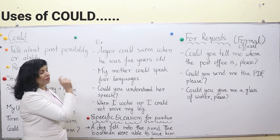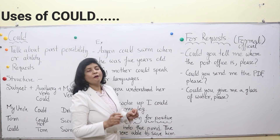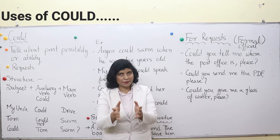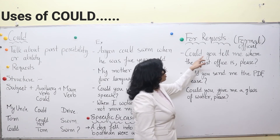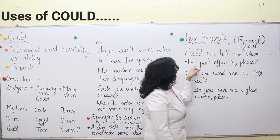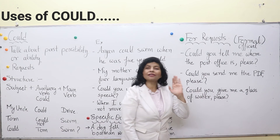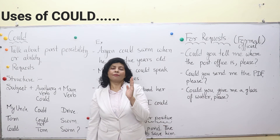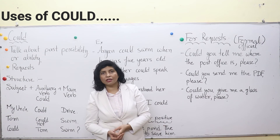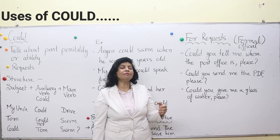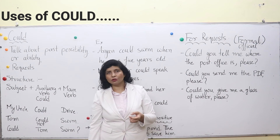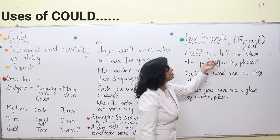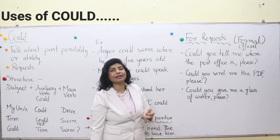Moving on to requests. We can also use could for formal requests in the present tense. For example: could you tell me where the post office is? This is a formal sentence — you are meeting some stranger or some official and you are asking: could you please tell me where the post office is? This is a formal request — for official purposes or any formal settings.